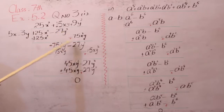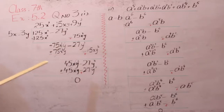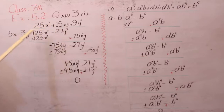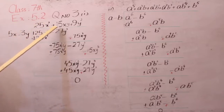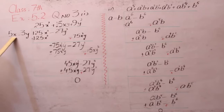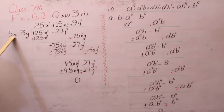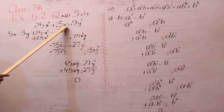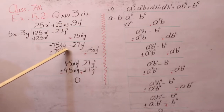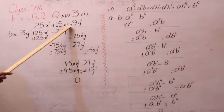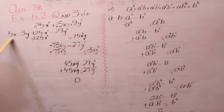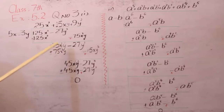अब यह जो value extra side पे लिखी हुई है, x variable के according हम इसको first पे लिख लेंगे: 75x की 2y। और ऊपर से नीचे क्या आ गया? 27y की 3 — y का cube। आप देखें बेटा, 75 बनाना है। सबसे पहले हमें कौन सी चीज़ required है? हमने plus का sign लिखा। 5 को किससे multiply करेंगे कि 75 बने? 15 — और उस value को ऊपर लिखेंगे: 15xy।